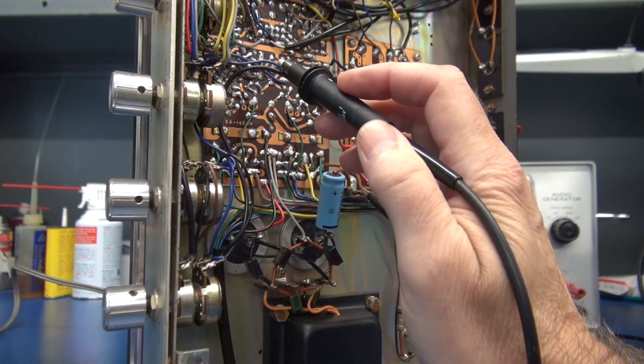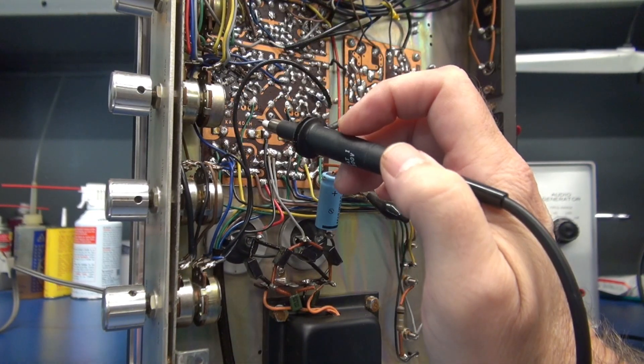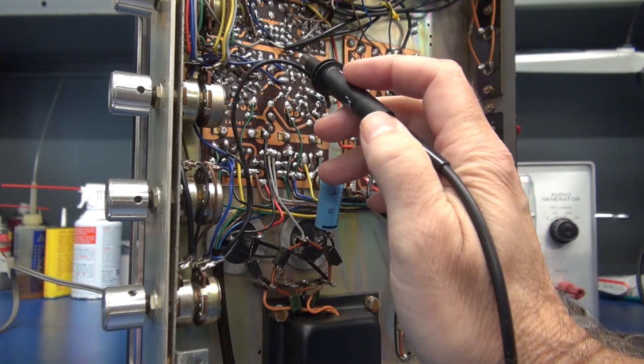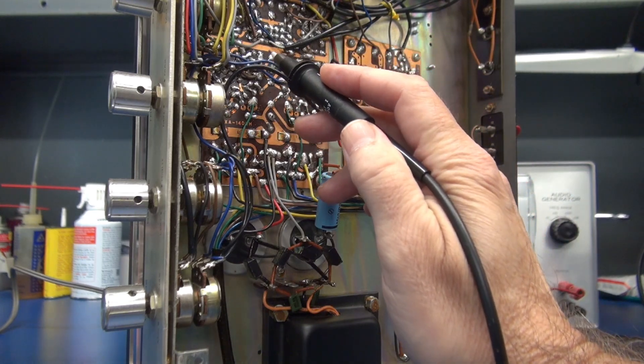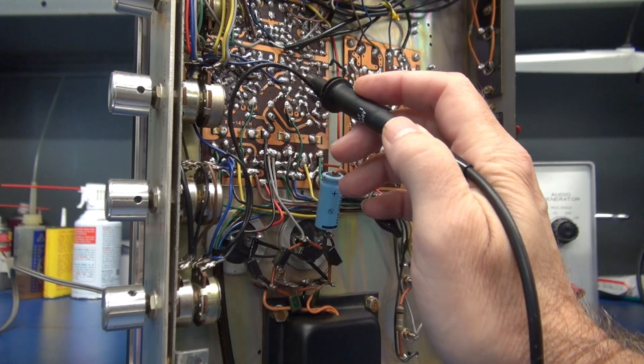Here's the blue and there's the brown. I have signal making it to this point on the board which is getting really close to the balance and volume controls. So I'm guessing that we're losing the signal right in this area. Let's zoom in.